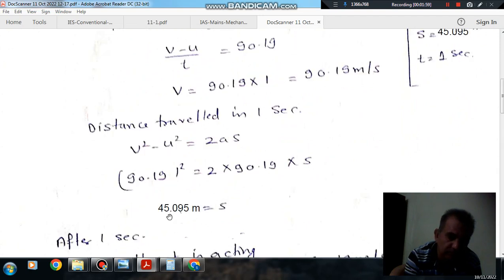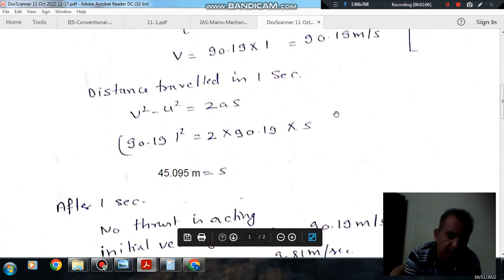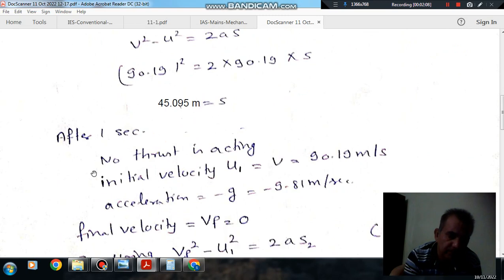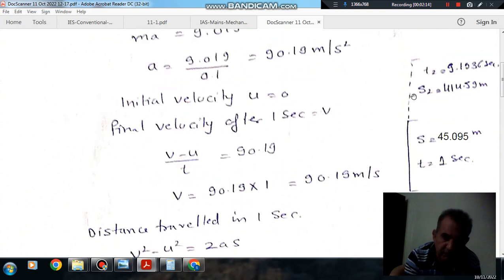Using v² - u² = 2as: distance s1 = 45.095 meters. After 1 second, no thrust is activated. At this stage, there is no thrust acting.